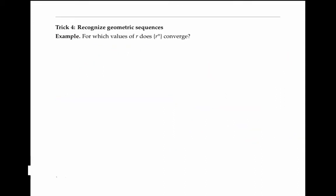If you can recognize a sequence as a geometric sequence, it's pretty easy to decide whether it converges or diverges. Recall that a geometric sequence has the form a·r^(n-1) where n runs from one to infinity, or sometimes a·r^n where n runs from zero to infinity. Let's figure out for what values of r the sequence r^n converges. It's not very important whether n starts at zero or one, since when we talk about convergence we care about behavior as n goes to infinity.